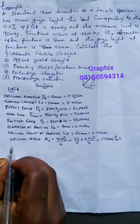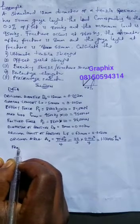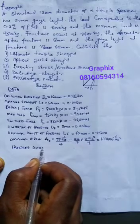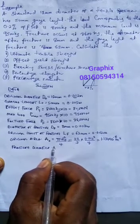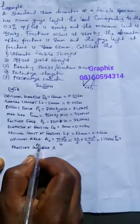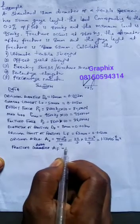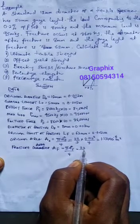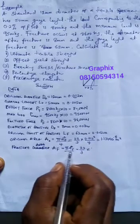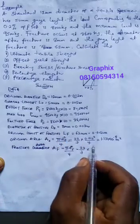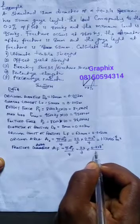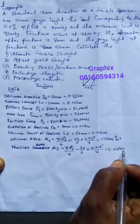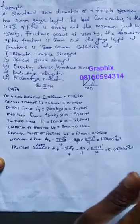Since we have the fracture diameter, we now calculate the fracture area, A_f = π × D_f² / 4. That gives (22/7) × (0.008)² / 4. This equals 5.027 × 10⁻⁵ meter squared. That is the fracture area.